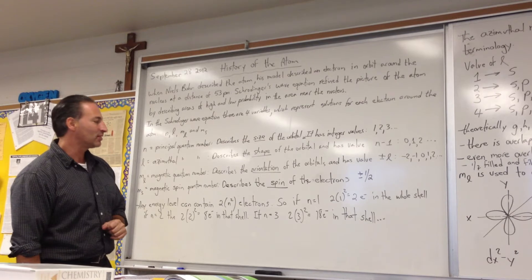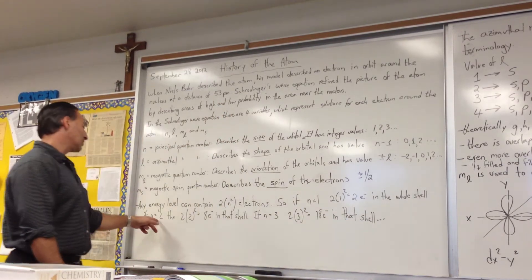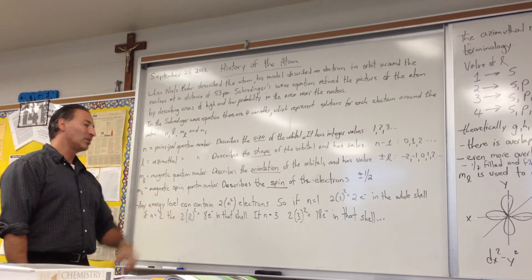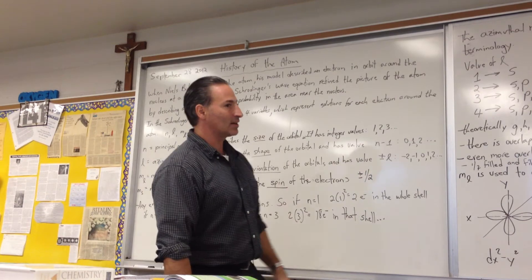That's how many electrons that shell can hold. So if your principal quantum number is one, you can hold up to two electrons in the whole shell. If the principal quantum number is two, that shell can hold up to eight electrons. If the principal quantum number is three, you can get up to 18 electrons in that shell.